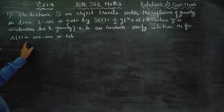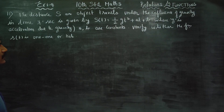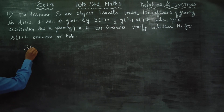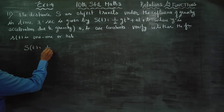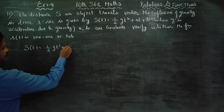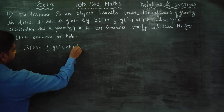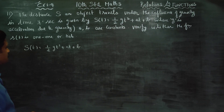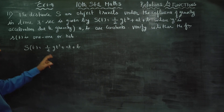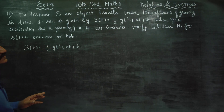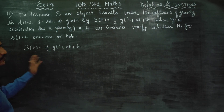Verify whether the function s of t is one-one or not. Now, s of t is equal to 1 by 2 g t squared plus a t plus b. This is my distance and this is my time. Distance traveled by a body or object in time t seconds — that is the equation of motion.